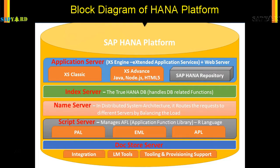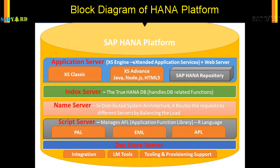Then comes the Script Server, which manages the Application Function Library. It is also associated with the R language and contains reusable methods and algorithms. The R language is used for advanced scenarios like machine learning. It has three important components: PAL (Predictive Analysis Library), EML (External Machine Learning Library), and APL (Application Programming Library).